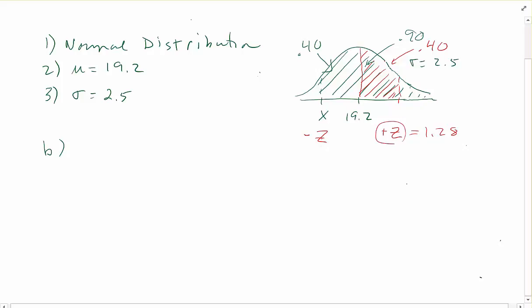So this Z value is 1.28. That means that the Z value for my X is negative 1.28. I am on the left side there. So I can say that negative 1.28 is X minus 19.2 over 2.5. And solving this for X, I would multiply both sides by 2.5